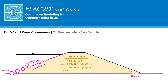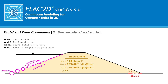We are now almost ready to conduct the analysis. An uncoupled analysis will be conducted in which steady-state seepage is determined without changes in effective stress. This is achieved with: (1) model fluid active on, to turn on fluid flow calculations, and (2) model mech active off, to turn off mechanical calculations. Steady-state seepage is solved by cycling to a fluid convergence ratio of 1×10⁻³, using the command model solve ratio-flow 1.0e-3. Results are saved with model save 2-seepageanalysis.sav.